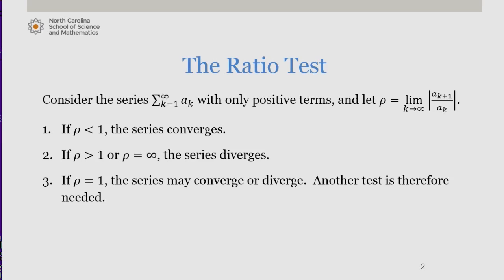Recall from our study of the ratio test for absolute convergence that for any series of the form sum from k equals 1 to infinity of a sub k, rho is equal to the limit as k approaches infinity of the absolute value of a sub k plus 1 divided by a sub k. If rho is less than 1, the series converges. If it's greater than 1 or infinity, the series diverges. And if rho equals 1, the series may converge or diverge, but another test is needed.